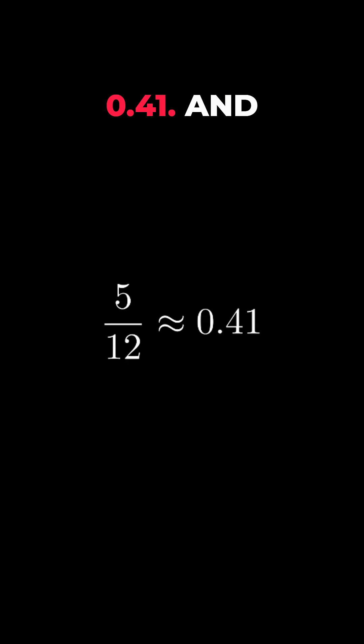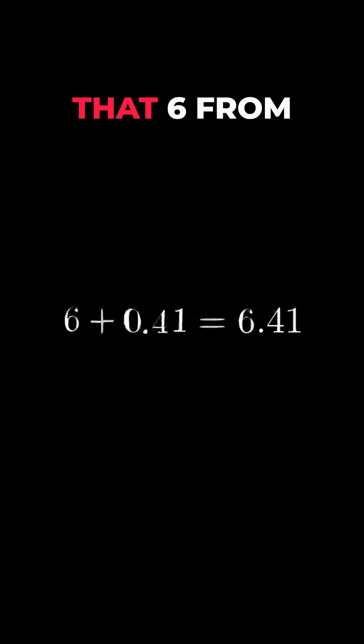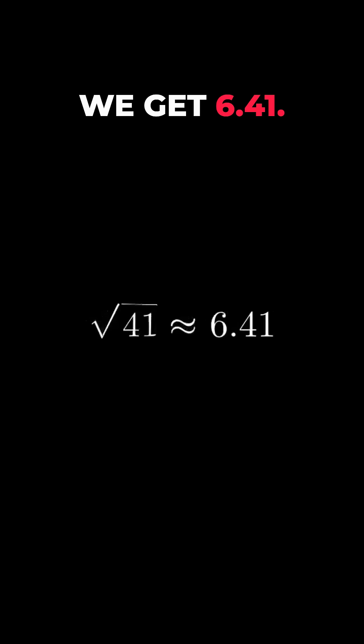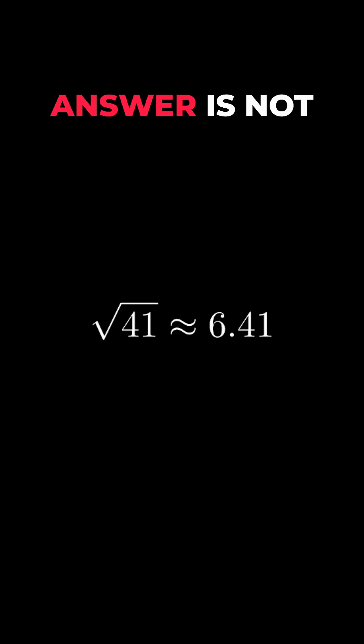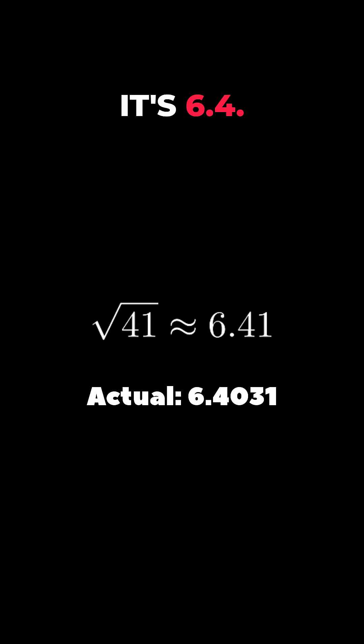5 over 12 is 0.41. And if we add it to that 6 from the beginning, we get 6.41. The actual answer is not off by a lot—it's 6.4.